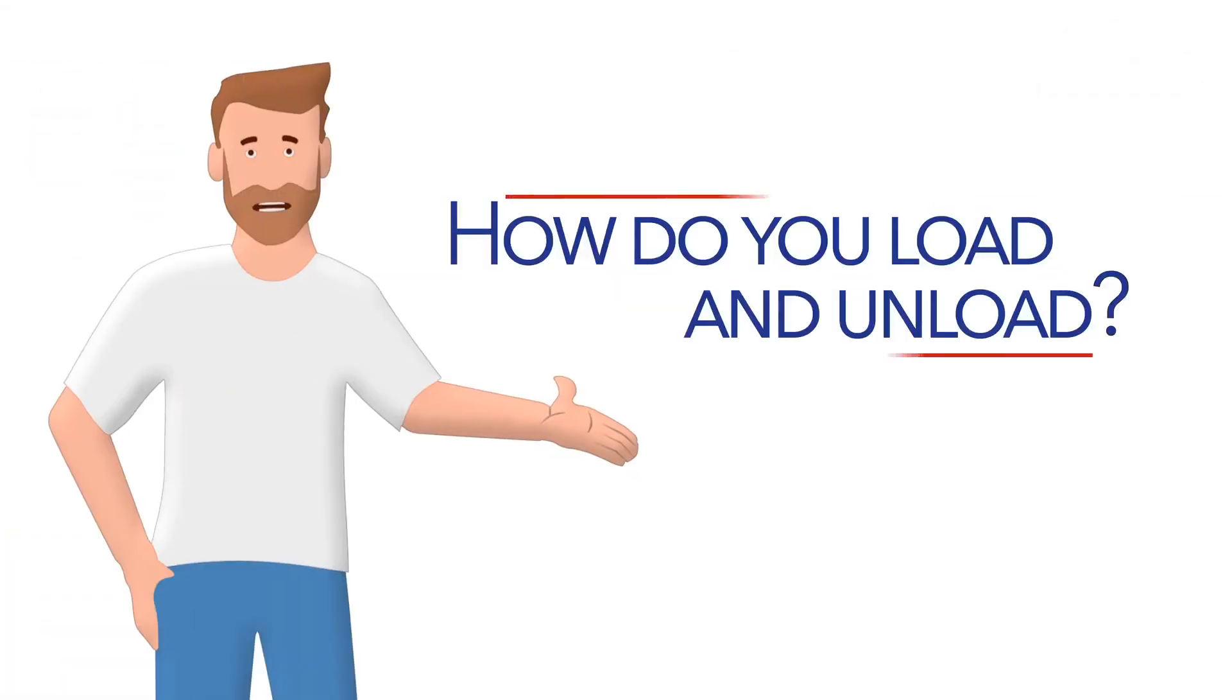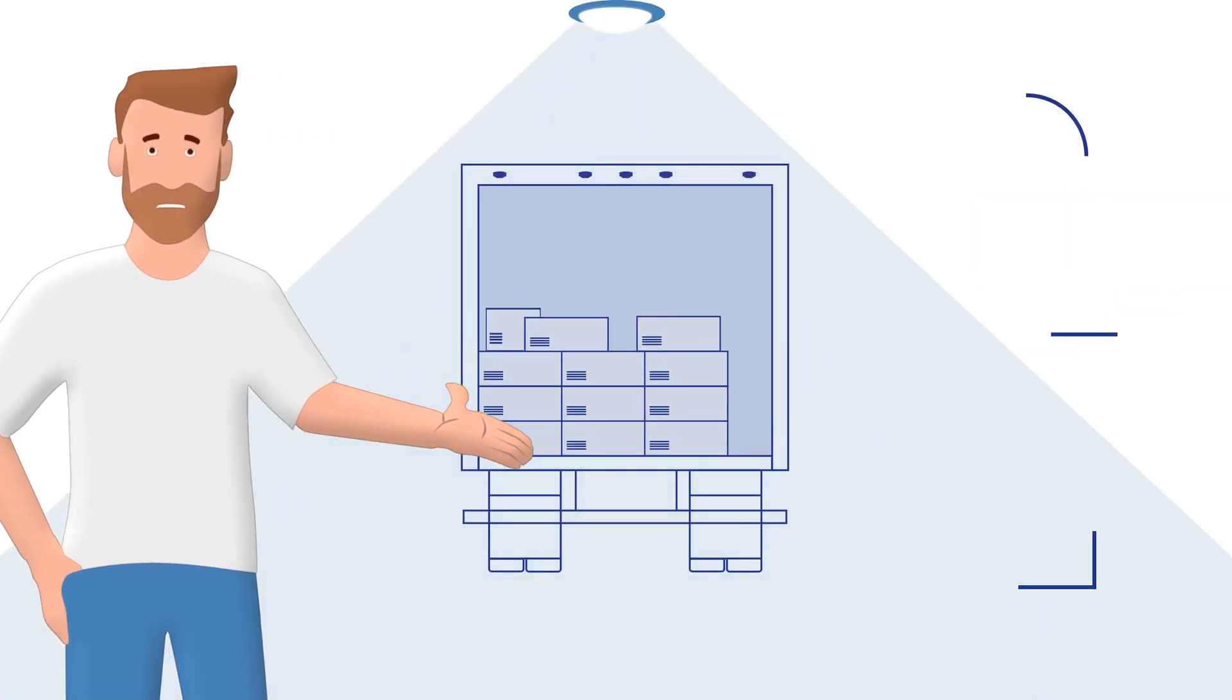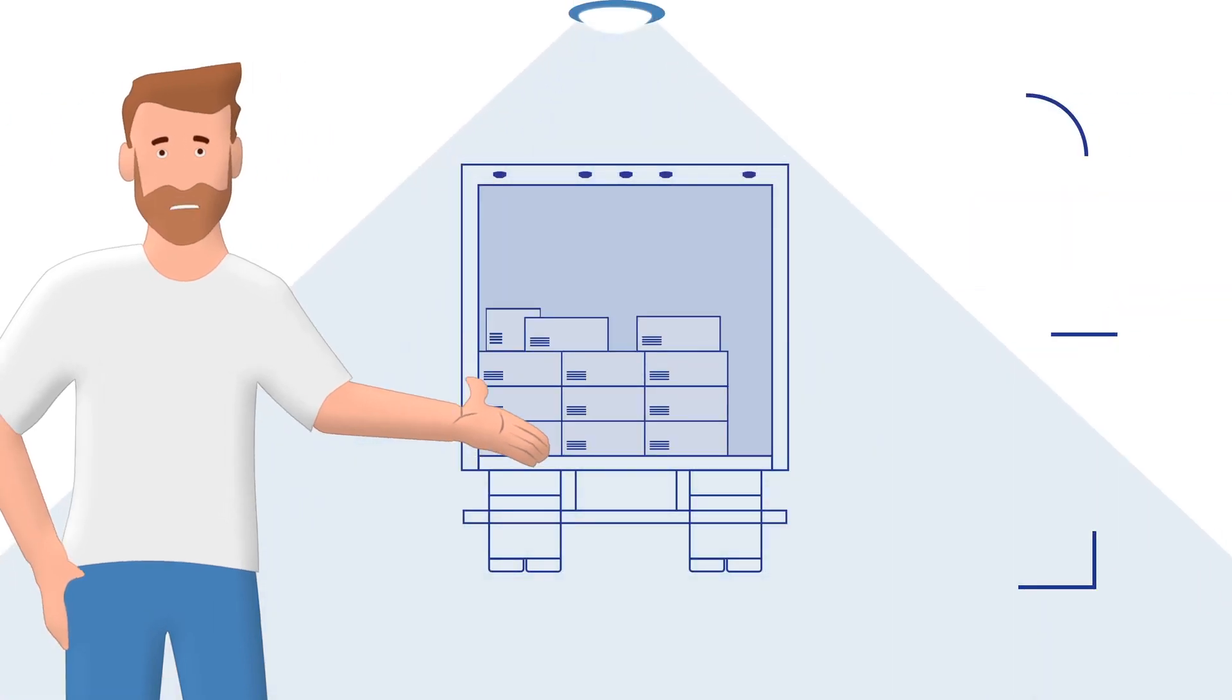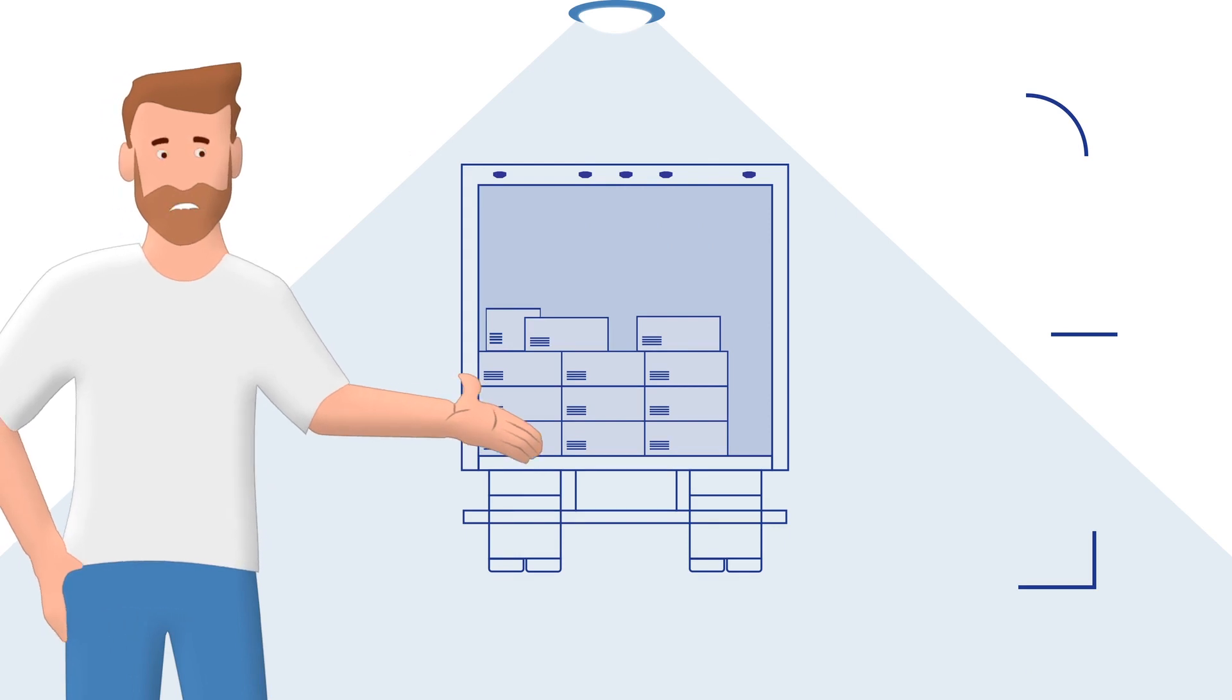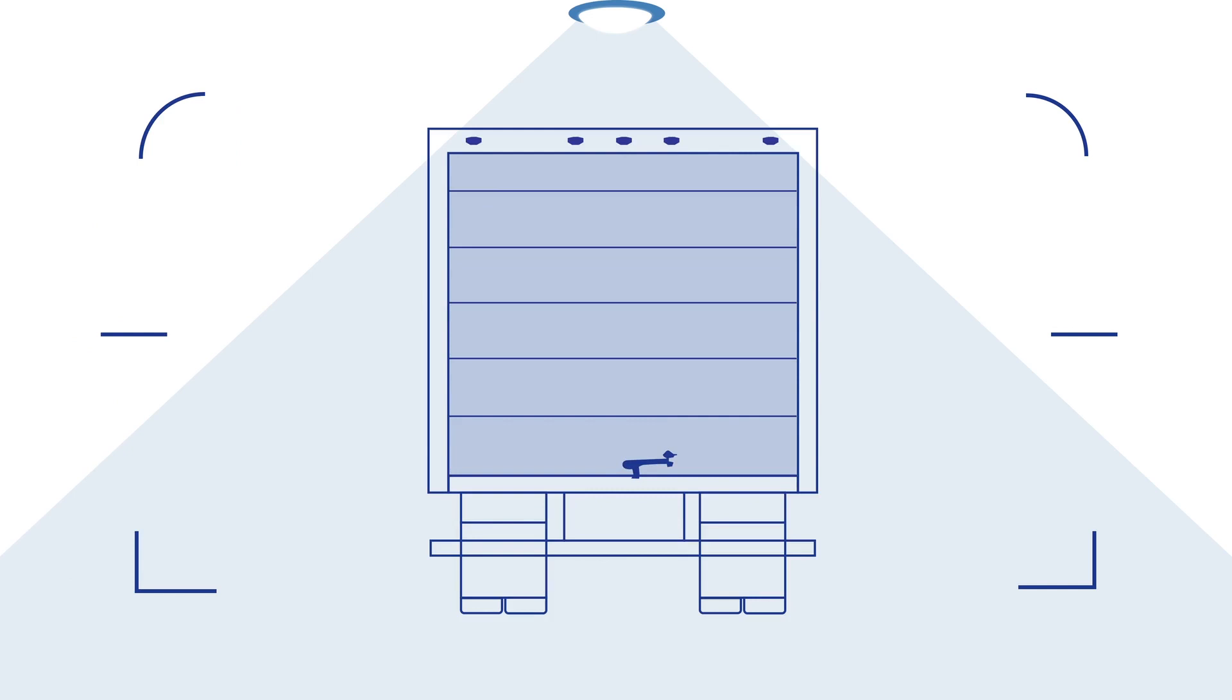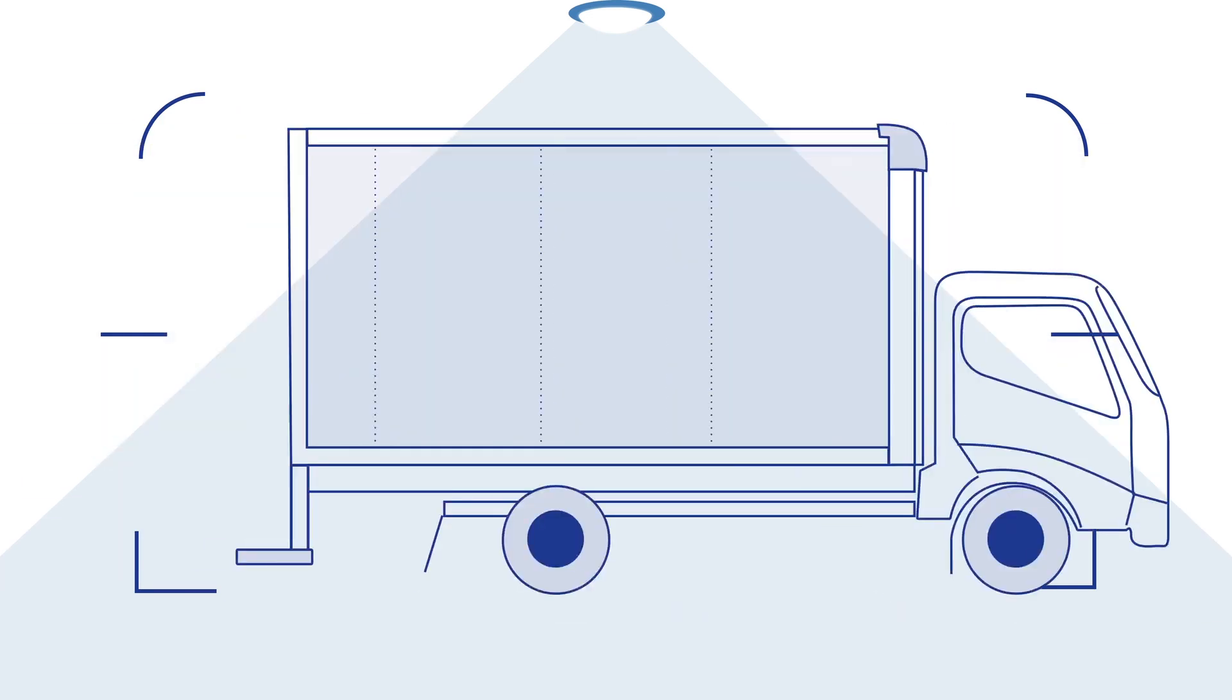Question number three, how do you load and unload? Specifying the right features can make loading and unloading easier and more efficient. The good news is Morgan dry freight bodies allow for easy access at the rear, with your choice of roll up overhead doors or swing panel doors. And the same is true for side access options.